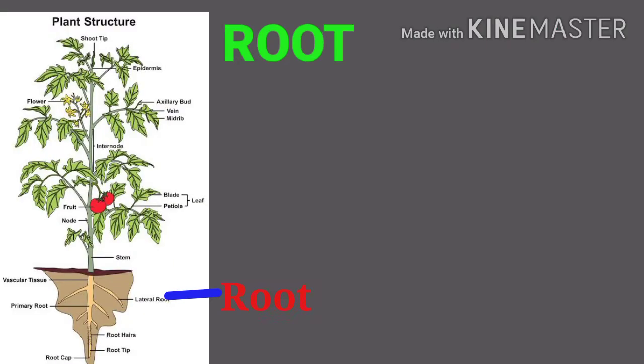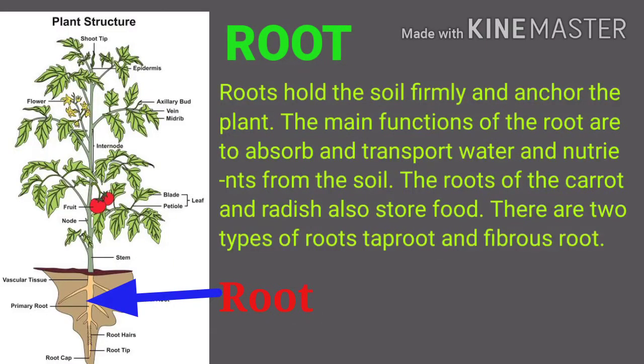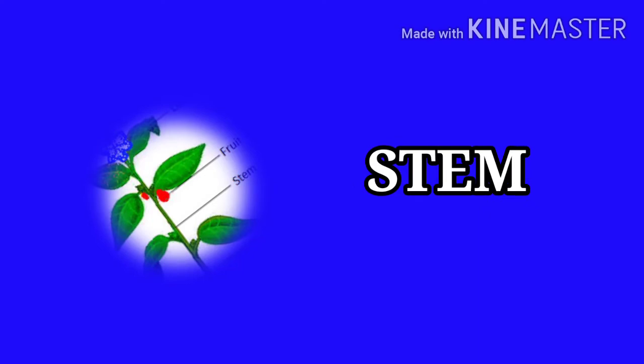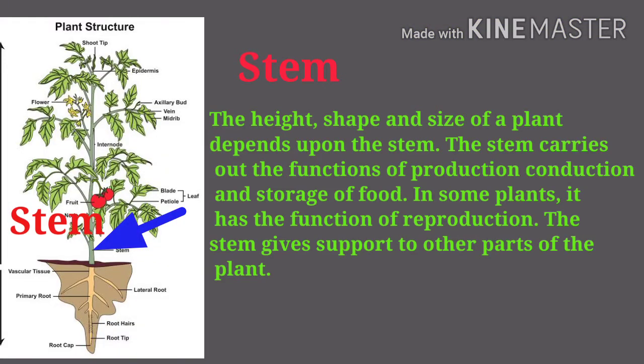Roots hold the soil firmly and anchor the plant. The main functions of the root are to absorb and transport water and nutrients from the soil. The roots of the carrot and radish also store food. There are two types of roots: tap root and fibrous root.